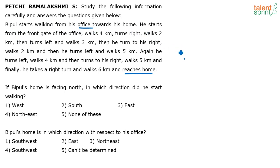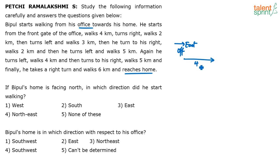Let's assume this is the office, and the front gate of the office is towards the east. That is our assumption. It may come out to be correct or wrong — if wrong, you just have to rotate by 90, 180, or 270 degrees to get the required answer. So assuming the front gate faces east, he starts and walks 4 kilometers towards the east. Then he turns right — when going east, right is towards the south — and walks 2 kilometers.